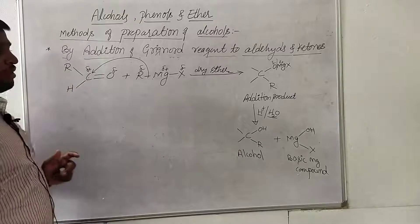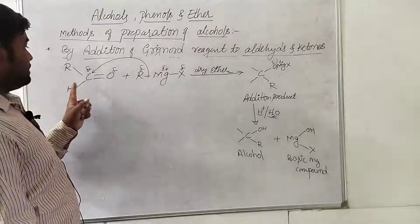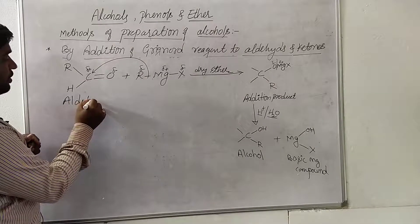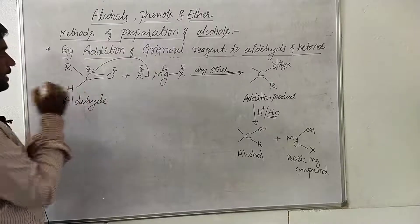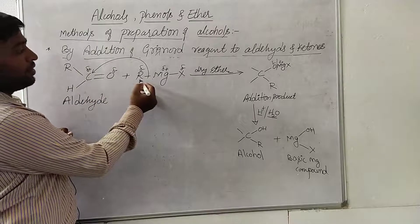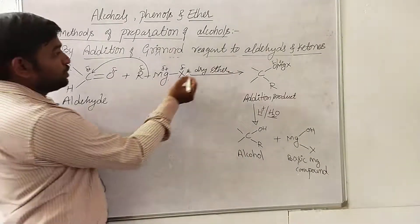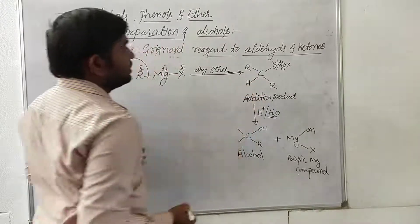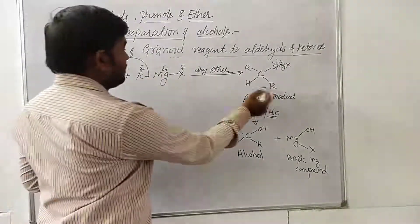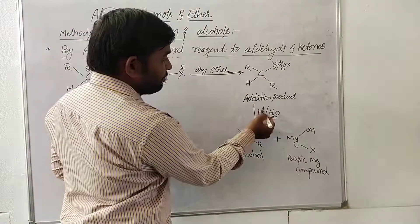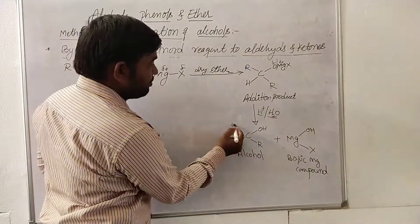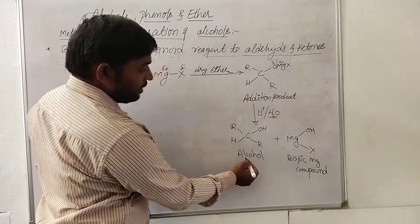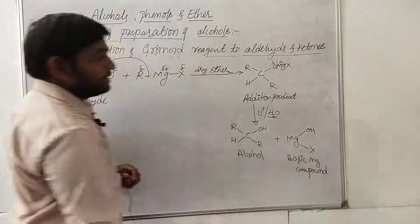Here I will take formaldehyde — a general aldehyde molecule. When this aldehyde reacts with RMgX, addition of the alkyl group R takes place to this carbon. Here we have R and H. Remaining is oxygen and MgX. Further, we undergo acid hydrolysis, which leads to formation of the corresponding alcohol, plus the basic magnesium compound MgOHX as before.